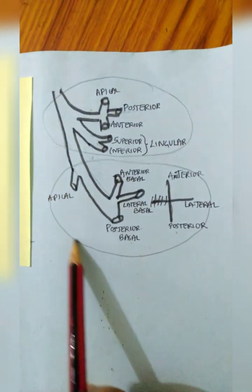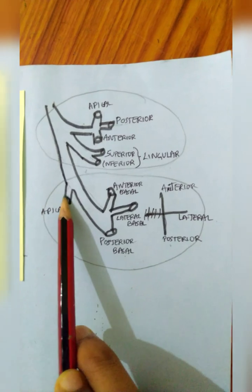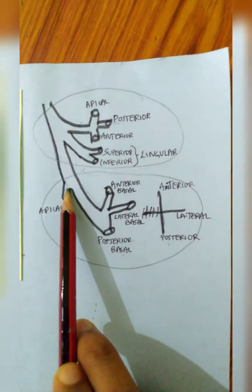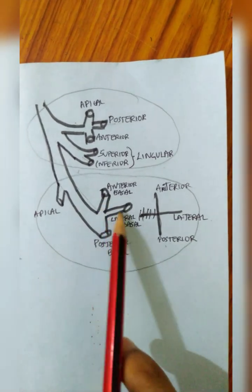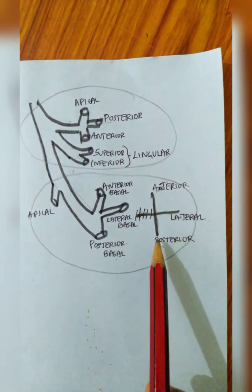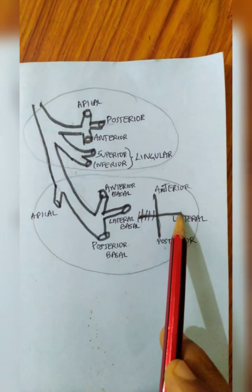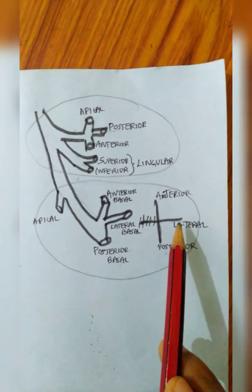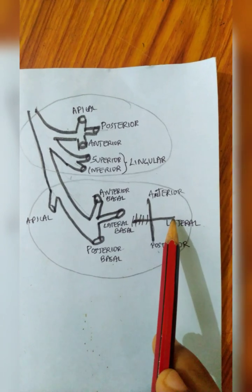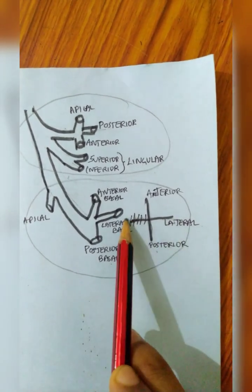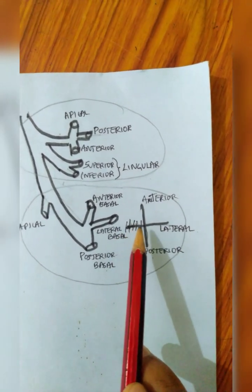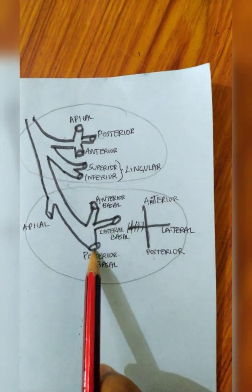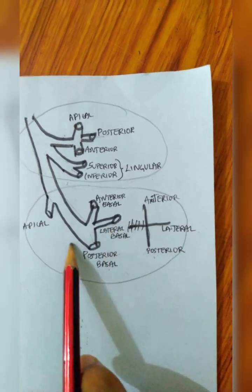The lower lobe: here one segment, that is the apical segment, because it arises from the upper, so we draw it at the top. To remember the rest, use the same cross mnemonic — anterior, posterior, but here it is lateral, not medial, because it is the left lung. Corresponding to the spine, it comes lateral, and this one portion would be medial, but in the left lung there is no medial segment. So only anterior, posterior, and lateral: anterior basal, posterior basal, and lateral basal — no medial.